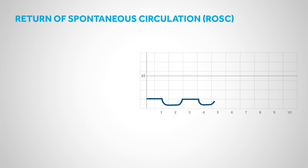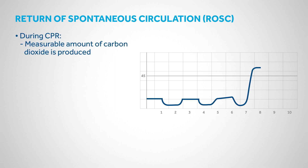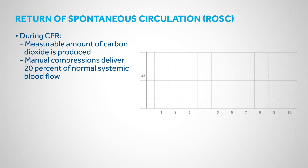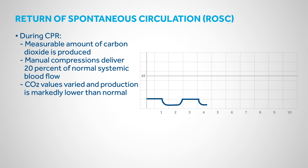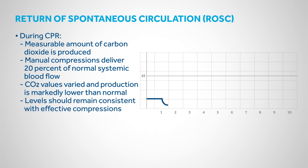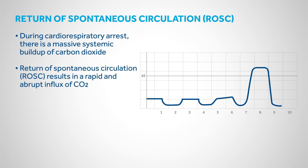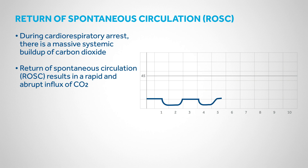During CPR, a measurable amount of carbon dioxide is produced during the delivery of effective chest compressions. Manual compressions have been shown to deliver 20% of normal systemic blood flow when performed according to current American Heart Association guidelines for resuscitation. CO2 values resulting from manual CPR are varied and markedly lower than normal, but levels should remain consistent with effective compressions. During cardiorespiratory arrest, there is a massive systemic buildup of carbon dioxide. Return of spontaneous circulation results in a rapid and abrupt influx of CO2.